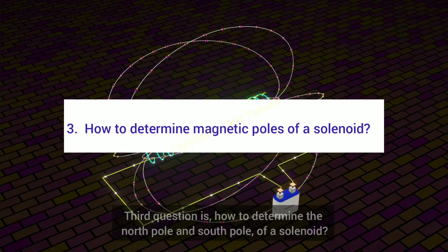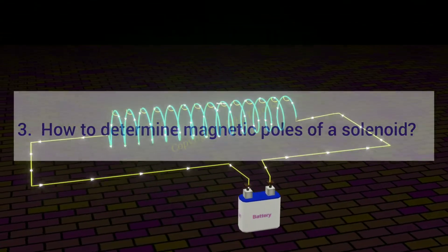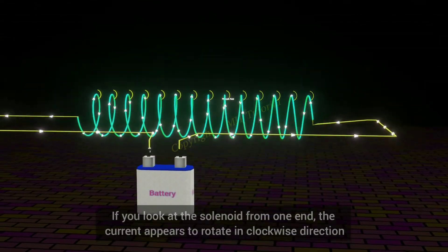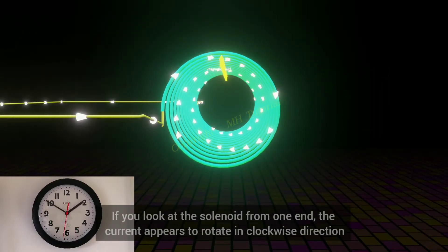Third question is, how to determine the north pole and south pole of a solenoid? If you look at the solenoid from one end, the current appears to rotate in clockwise direction.